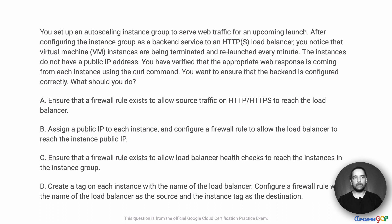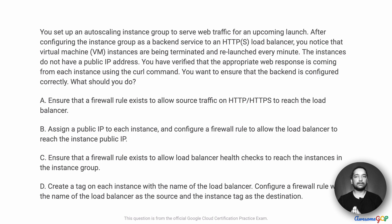In this project scenario, you set up an auto-scaling instance group to serve web traffic for an upcoming launch. After configuring the instance group as a backend service to an HTTPS load balancer, you notice that virtual machine instances are being terminated and relaunched every minute. The instances do not have a public IP address. You have verified that the appropriate web response is coming from each instance using the curl command. You want to ensure that the backend is configured correctly. What should you do?